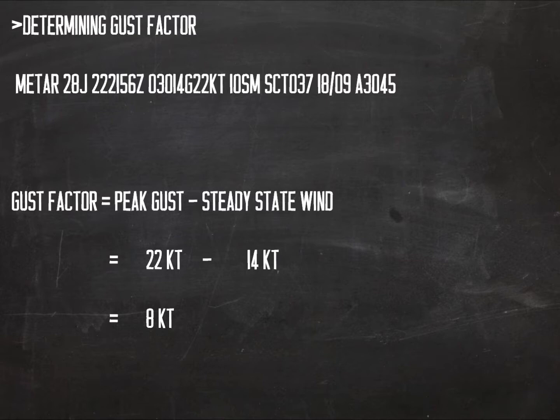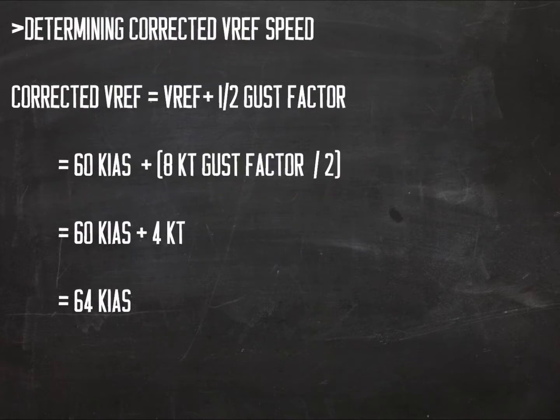In today's example, the winds are from 030 degrees at 14 knots gusting to 22. The gust factor can be easily determined by subtracting the steady state wind — 14 knots in our example — from the gust value of 22 knots. The result would be a gust factor of 8 knots. To determine the corrected VREF speed, add one-half the gust factor, or 4 knots, to the VREF obtained from the POH. Our corrected VREF would be 60 knots plus 4 knots, or 64 knots indicated airspeed for our final approach.